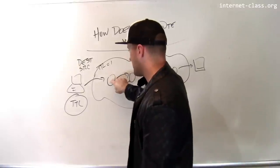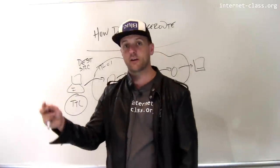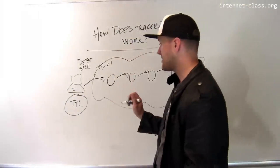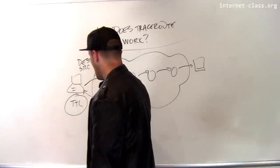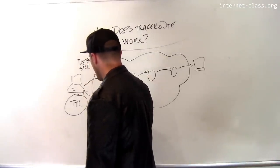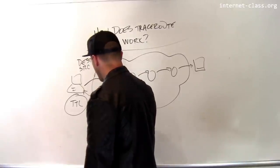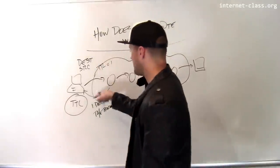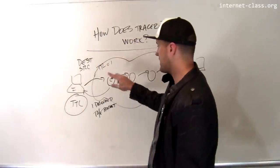So that packet gets to this router, this router says, uh-oh, the time to live decremented by one is zero, so I'm going to drop this packet, but I'm going to send a message back here that says I dropped the packet. And at that point, this router has identified itself, because I look at the source of the message that I get back from this router, and so let's say I found out this is router C. Great, okay.